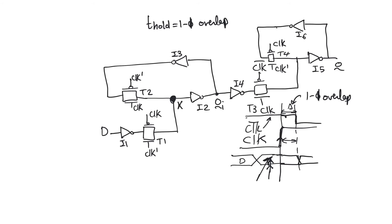We have to hold the data stable if the 1-1 overlap is enough time for data to make it through Inverter 1 and Transmission Gate 1 to node X. So T_hold equals T_1-1_overlap if and only if T_hold is also greater than T_inverter1 plus T_TG1. If the 1-1 overlap duration is less than the sum of the delays of Inverter 1 and Transmission Gate 1, then data changing after the active edge will not have enough time to reach X before clock bar becomes 0 and T1 closes. Therefore, we only need hold time if this inequality is satisfied.